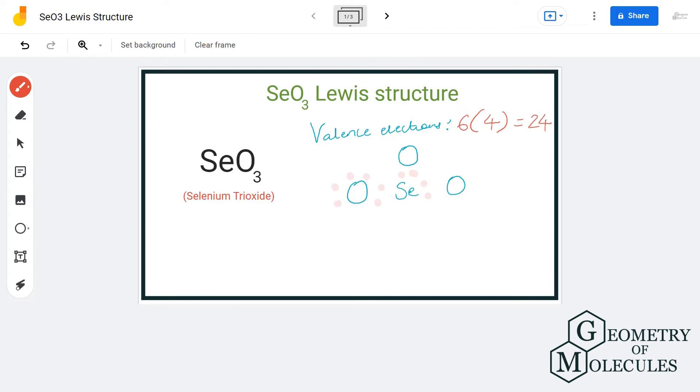If you look here closely, each oxygen atom requires six valence electrons to have a complete octet, and hence we are going to place six valence electrons around each oxygen atom. Now if you look over here, the selenium atom only has six valence electrons and requires two more electrons to have a complete octet.